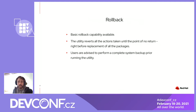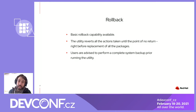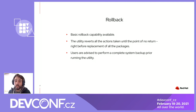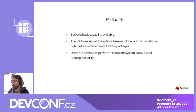The utility has implemented a basic rollback capability. If there's any failure during the conversion, it reverts all the actions the utility has taken, but only up to the so-called point of no return. The tool warns you about this point of no return, which is right before replacing all of the packages. Users are expected to have a complete system backup before running the tool, before the conversion.